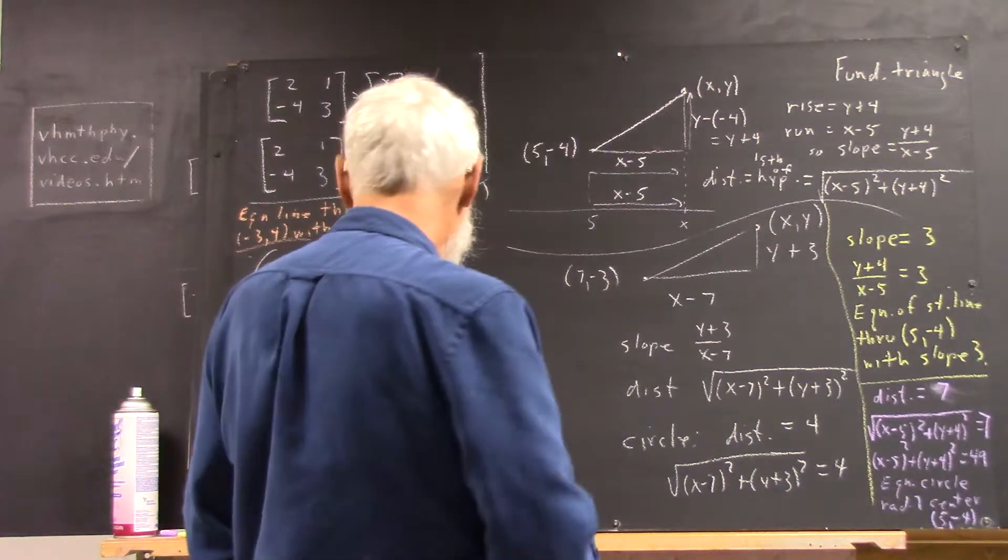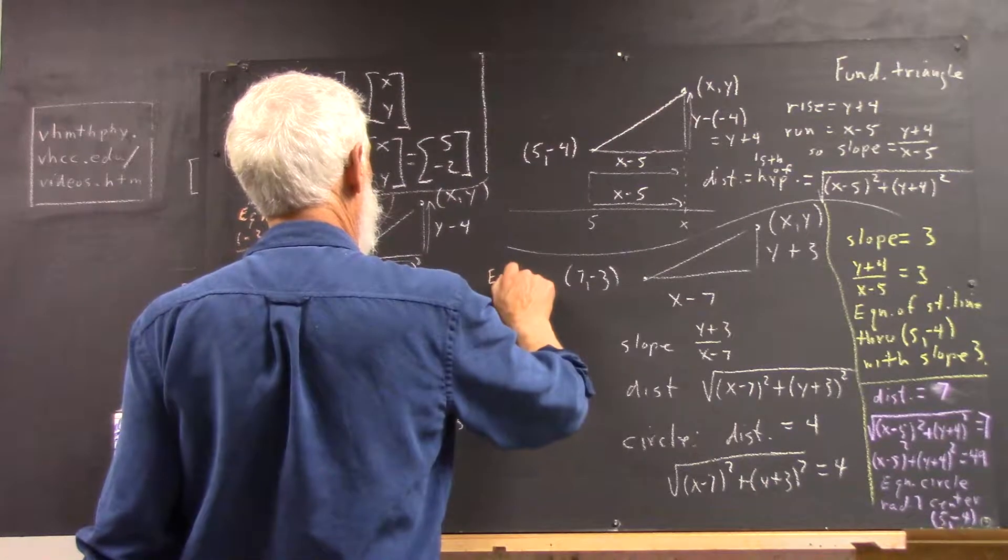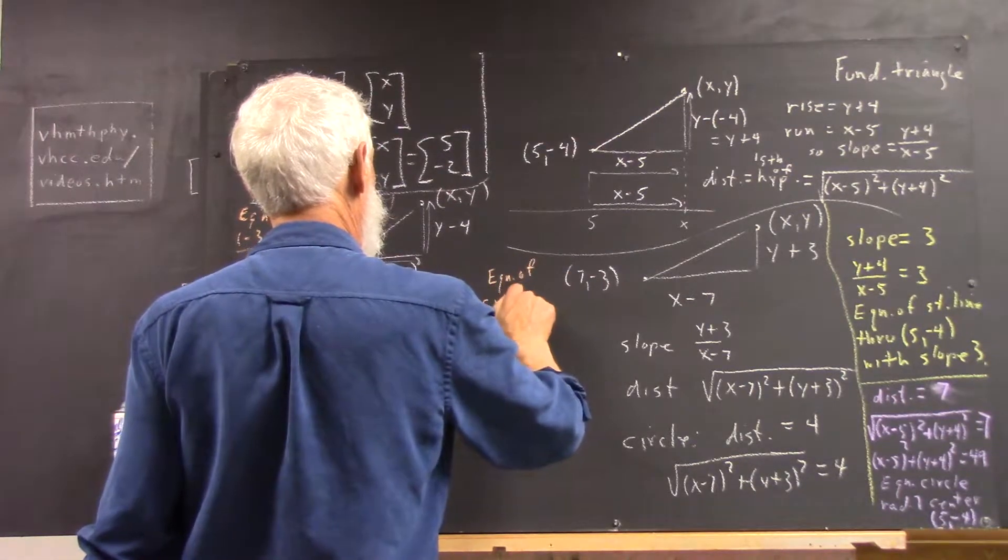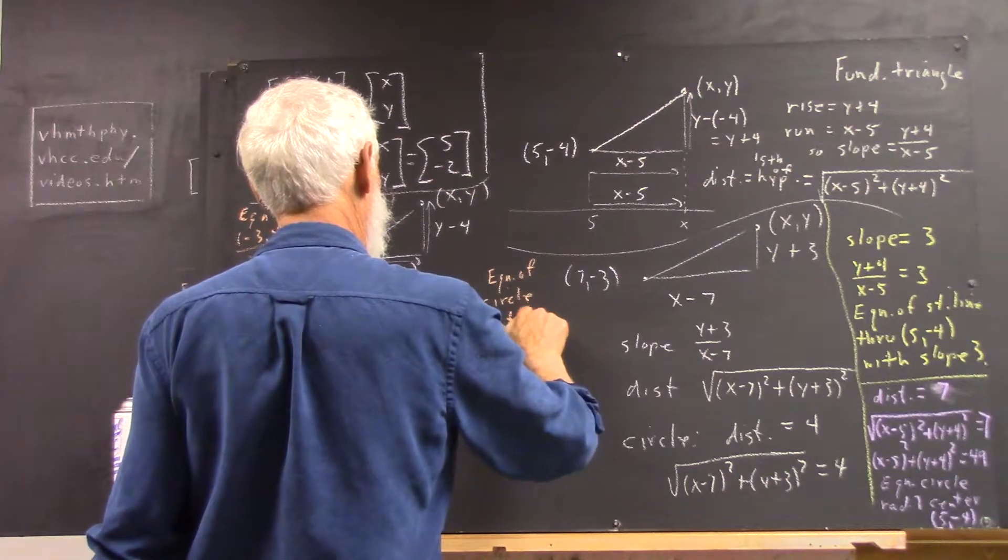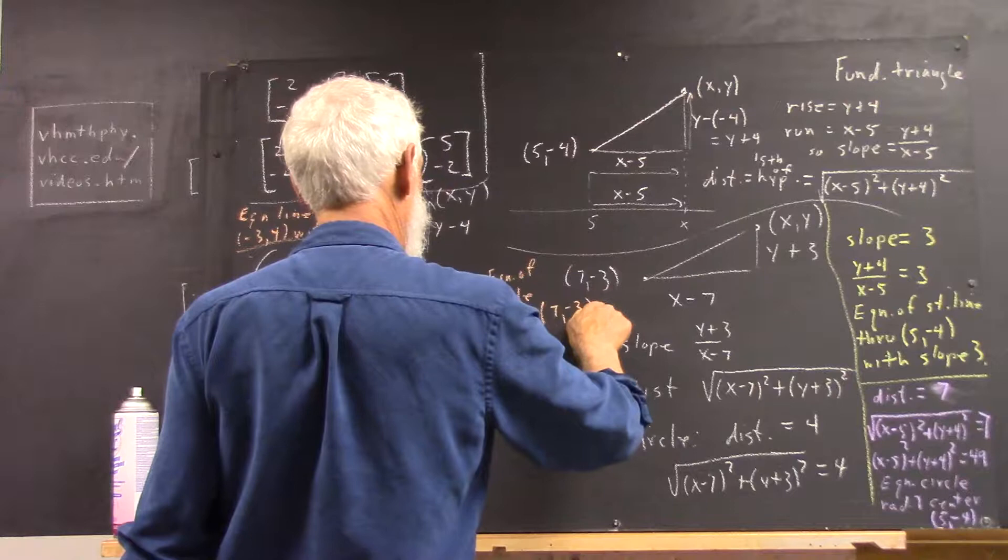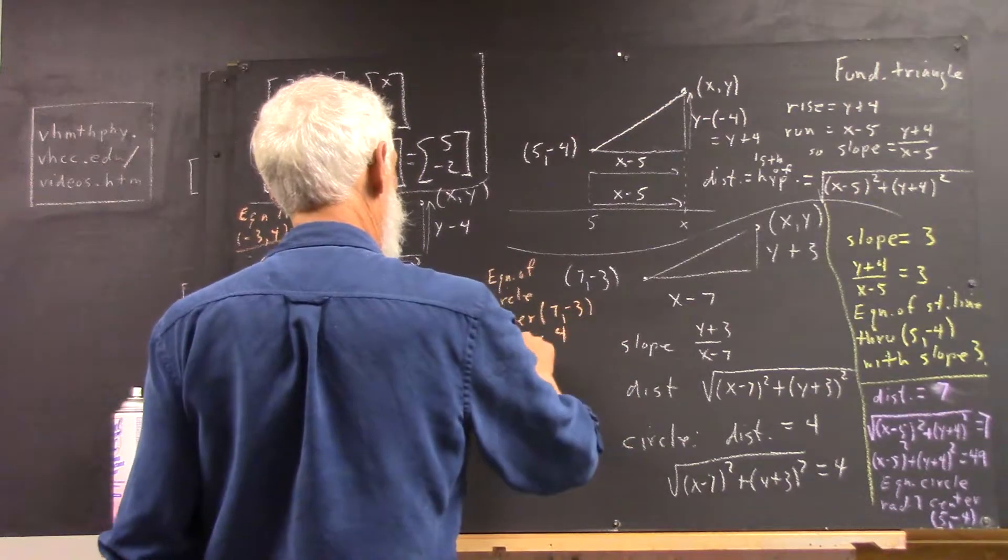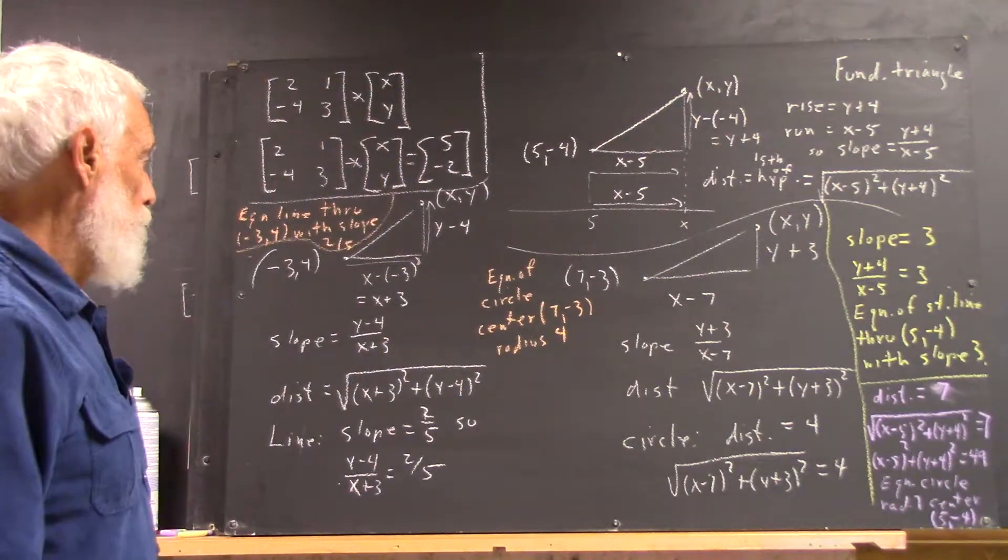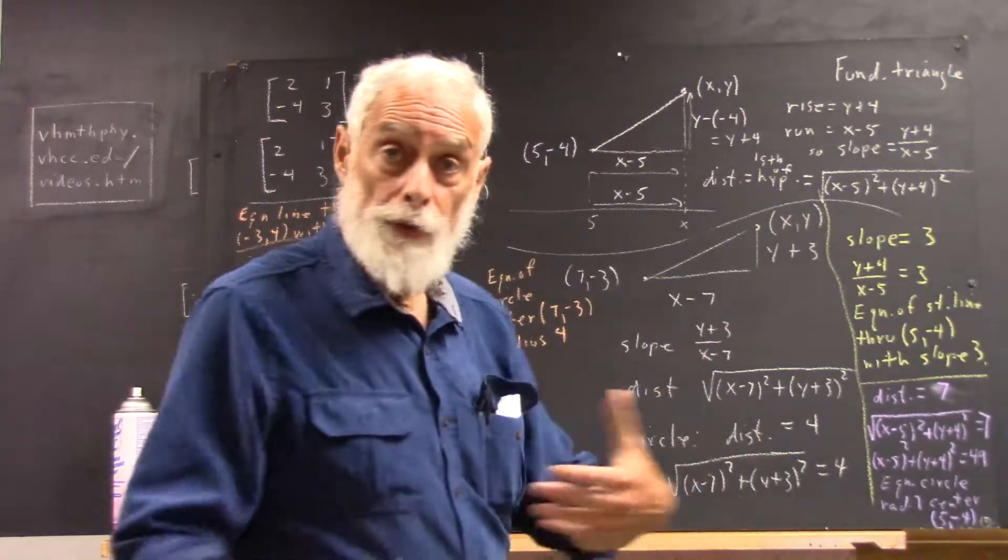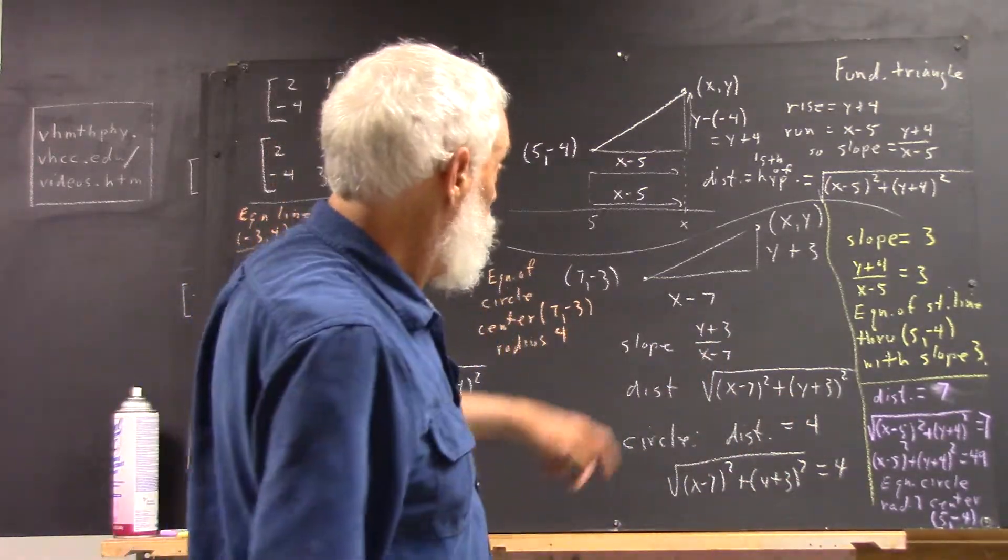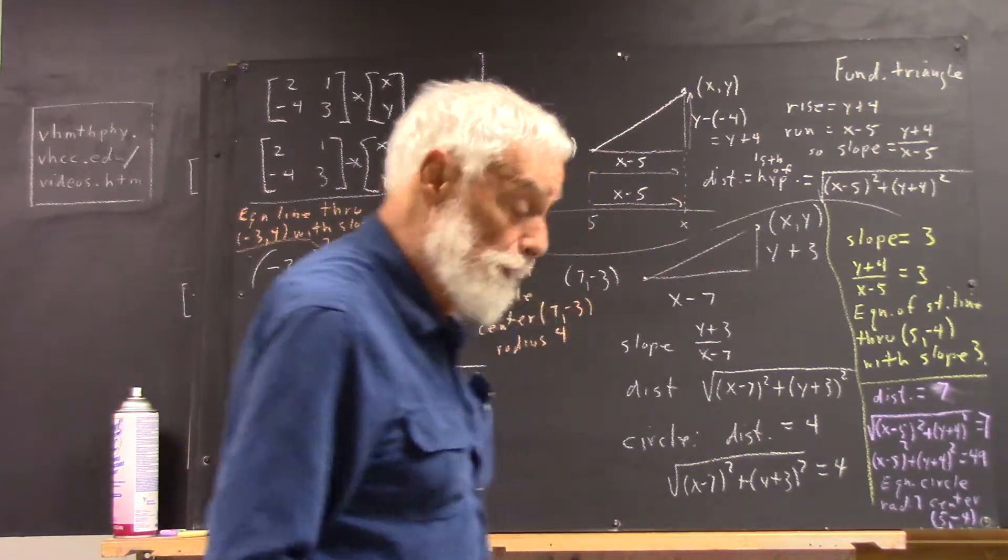Then we have the question, the equation of a circle. If its center is at 7 negative 3, and the radius is 4. So, we just automatically, we've got 7 negative 3 in the center. We've got an arbitrary point out there that's got to be at a certain distance. We call that point x, y, and we have our point 7 negative 3, and we do our fundamental triangle again.